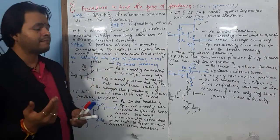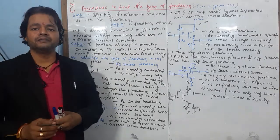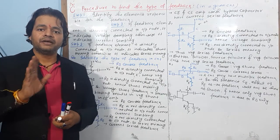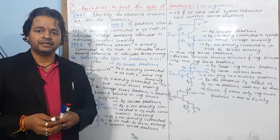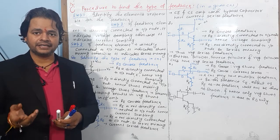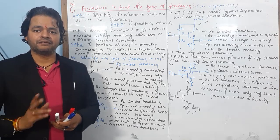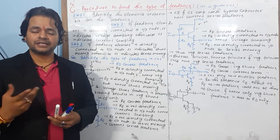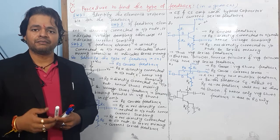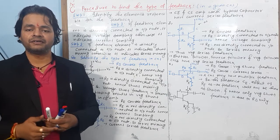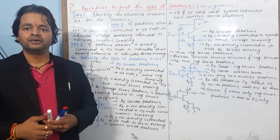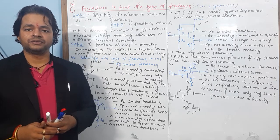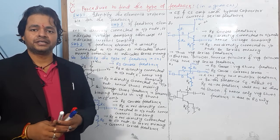We have a feedback amplifier, and given a circuit, you need to know which type of feedback it is: current series feedback, current shunt feedback, voltage series feedback, or voltage shunt feedback. It is very important to know the procedure or steps to find the type of feedback in the given circuit.